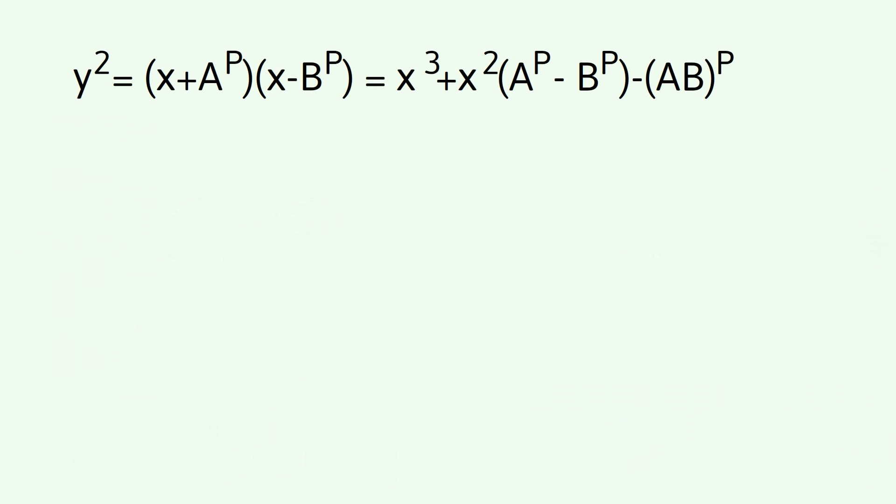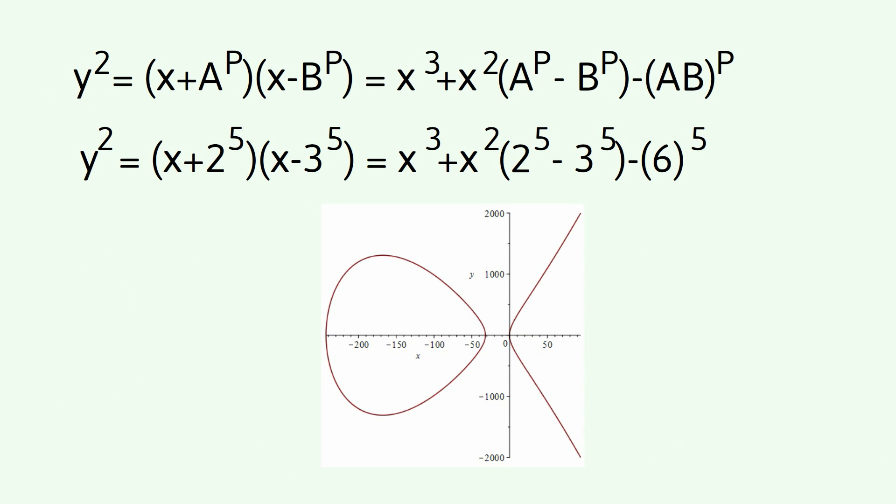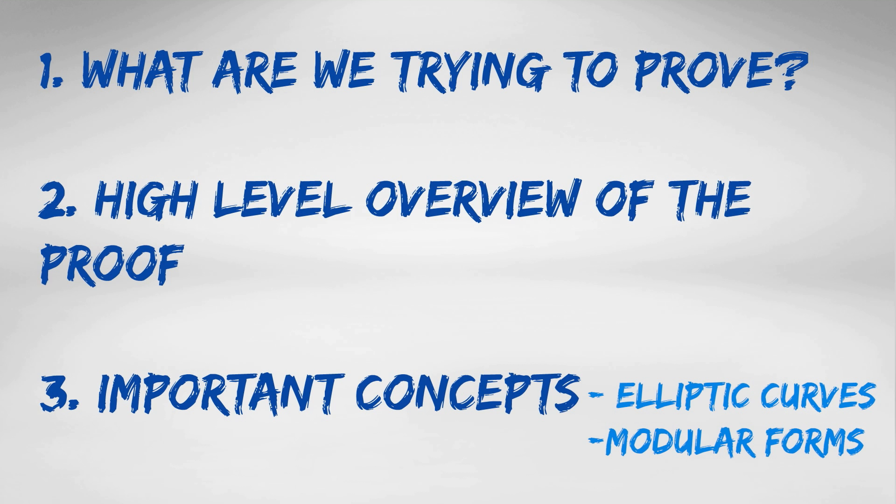So, the curve that we mentioned in the proof, this one, falls into the category of being an elliptic curve. Just for example, let's make a equal 2, b equal 3 and p equal 5. And let's put up a graph of what that curve looks like.